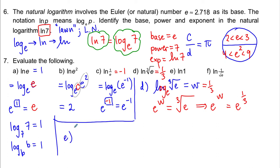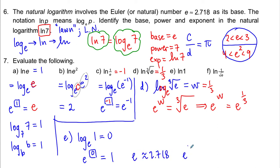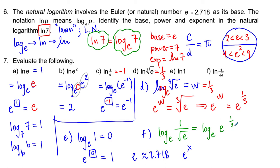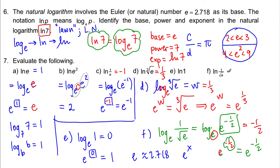For ln of 1: the exponent we put on e to get the power of 1 is 0. Note that since e is approximately 2.718, e to the x gives exponential growth — e is a positive number more than 1, so it is an acceptable base. For ln of 1 over the square root of e: the '1 over' means a negative exponent and the square root means a 1/2 exponent, so e to the what equals e to the negative 1/2. The exponent we're looking for is negative 1/2.